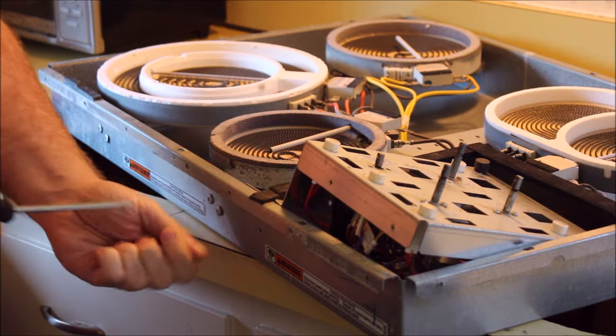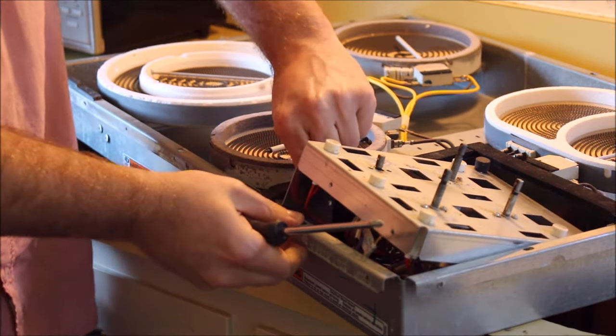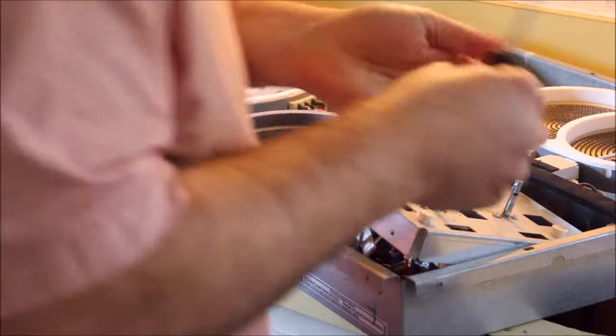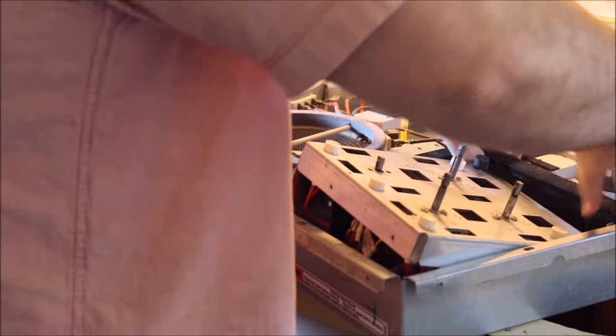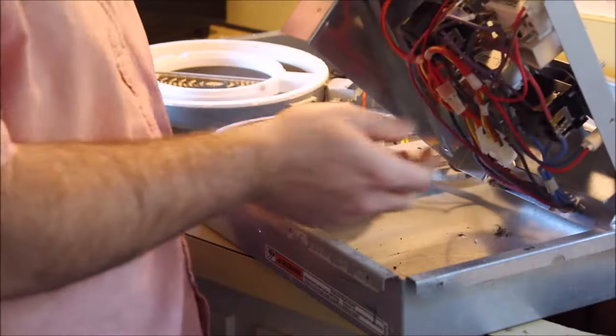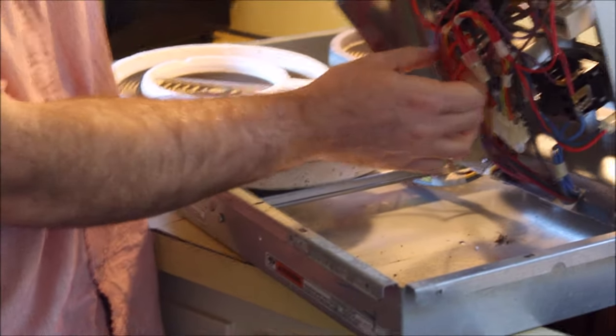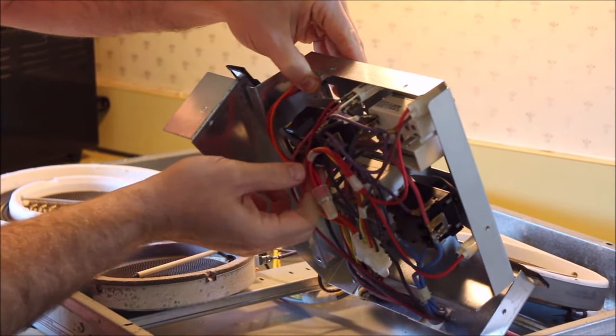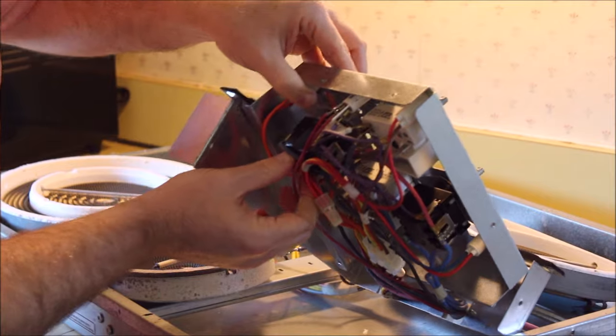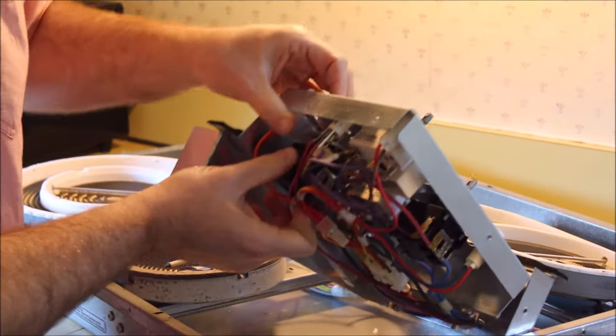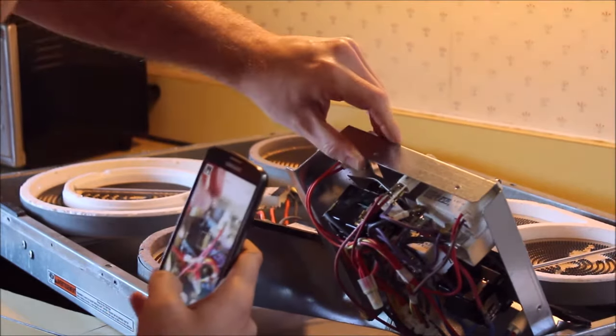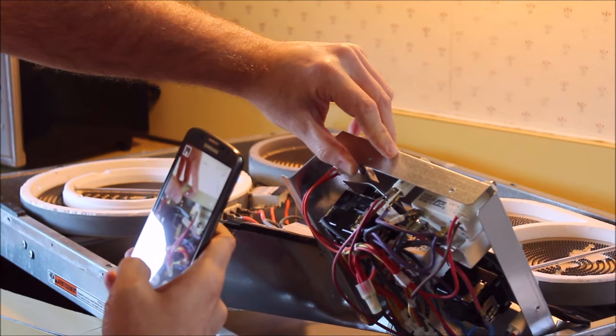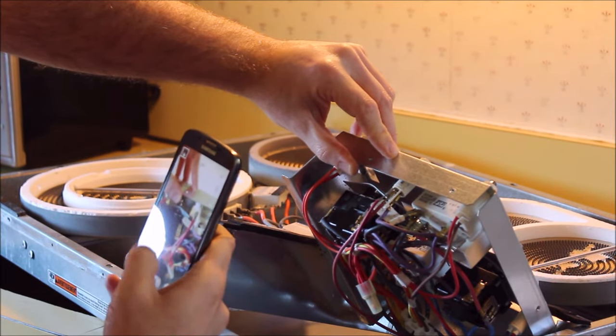We're taking out a couple more screws to get out one more piece of metal shrouding, just to get a little more access to this. Now we're going to see the back side of all the switches and the relays, and hopefully work our way in here and get this switch out so we can take a look at it. I'm taking a picture of the wiring right now so that I can see how to reassemble all of this.